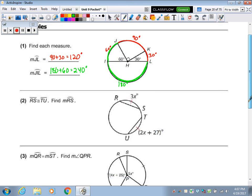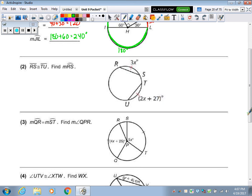Here are two congruent arcs. Two congruent arcs. So we have 3x has to equal 2x plus 27. Minus 2x off both sides. x equals 27. So the measure of arc RS is 3 times 27, which is 81.